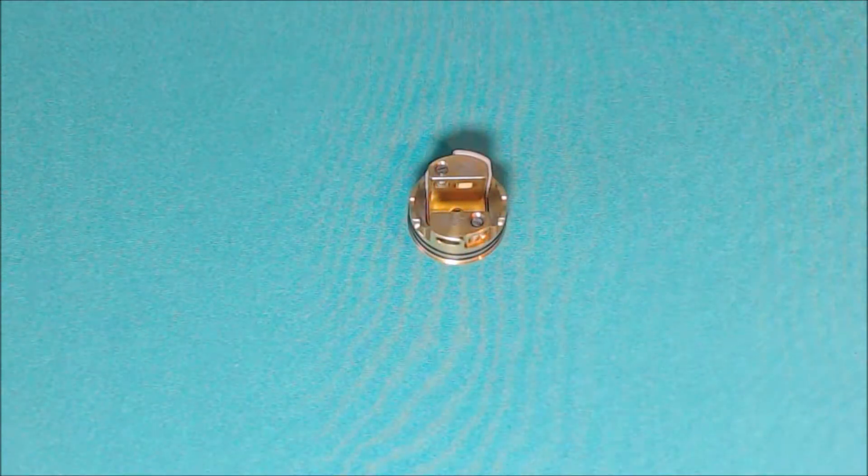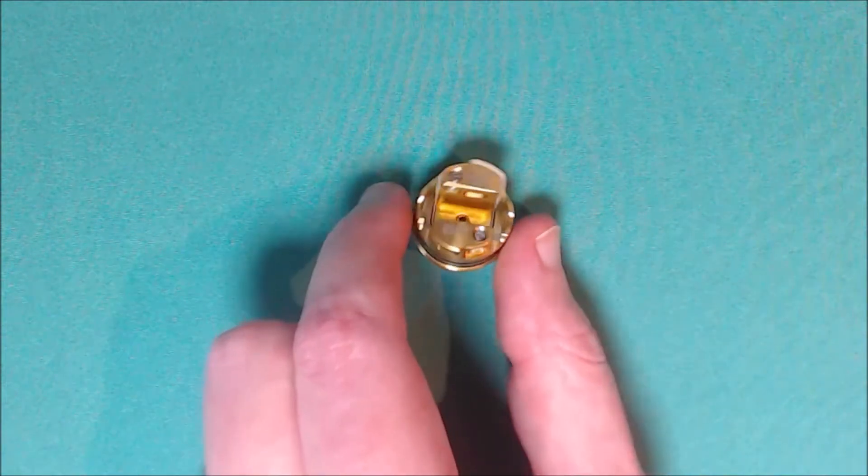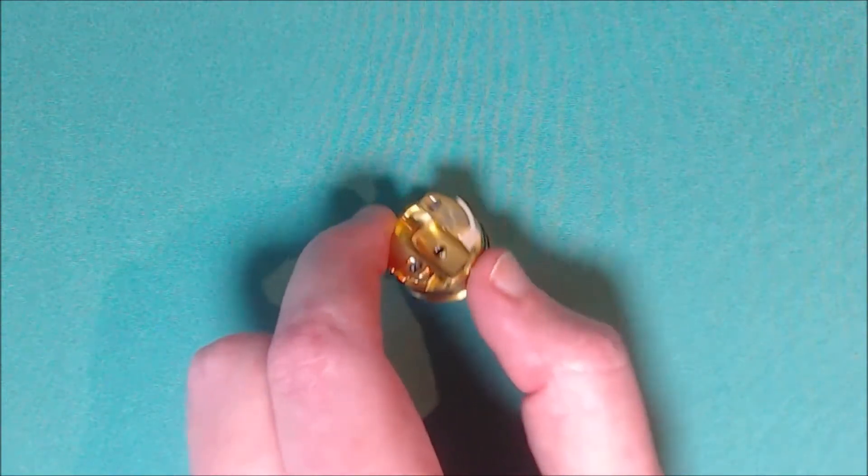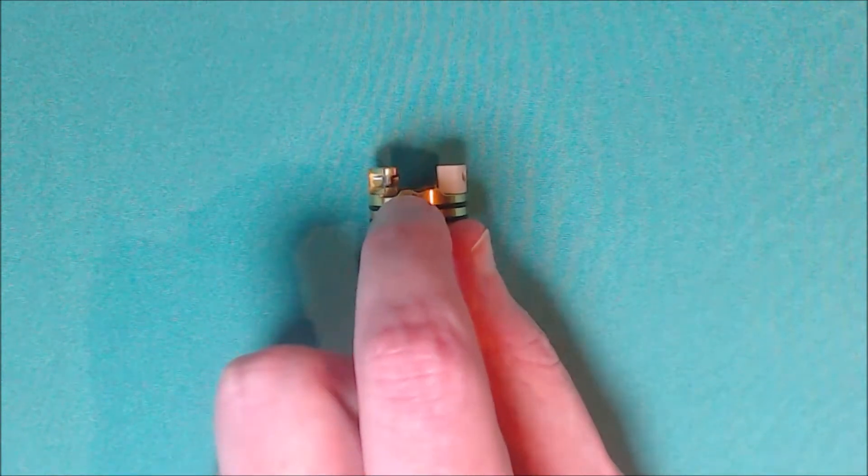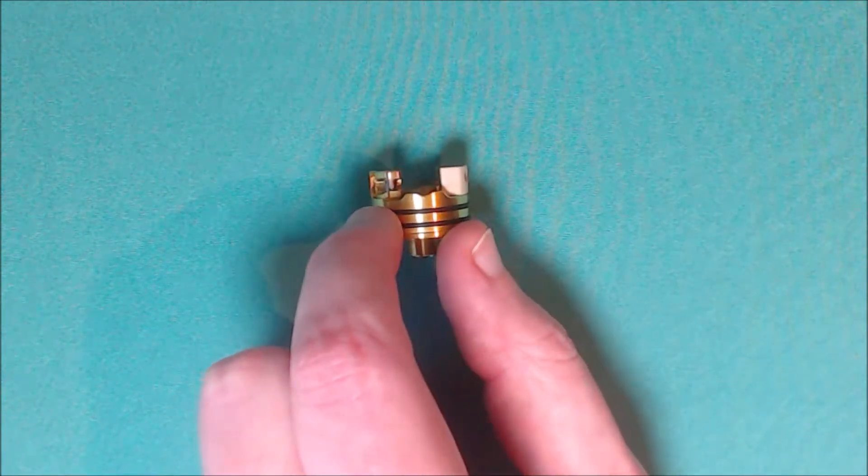And the deck. So let's take a quick look at the deck. So basically you've got on the side there, you can see you've got your little notch to put your coiling rod in when you're coiling it.